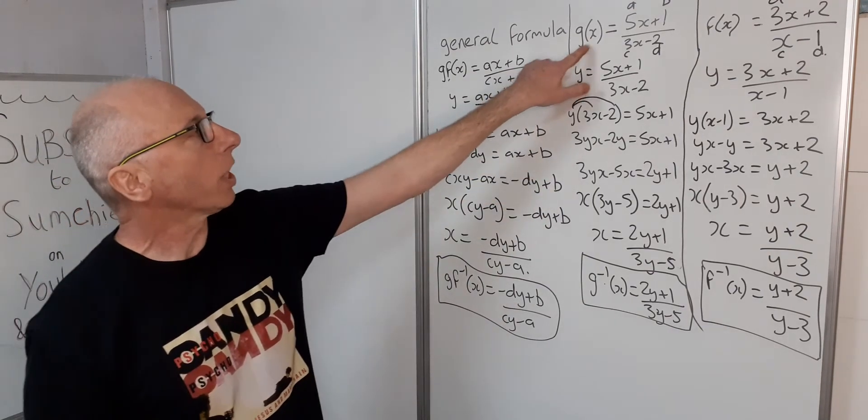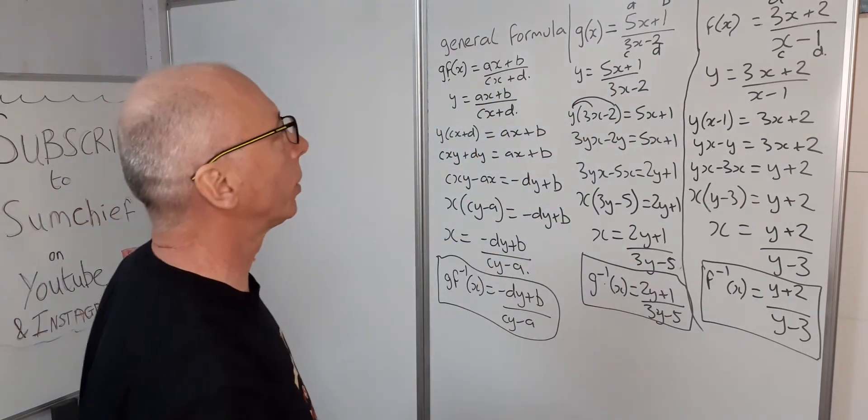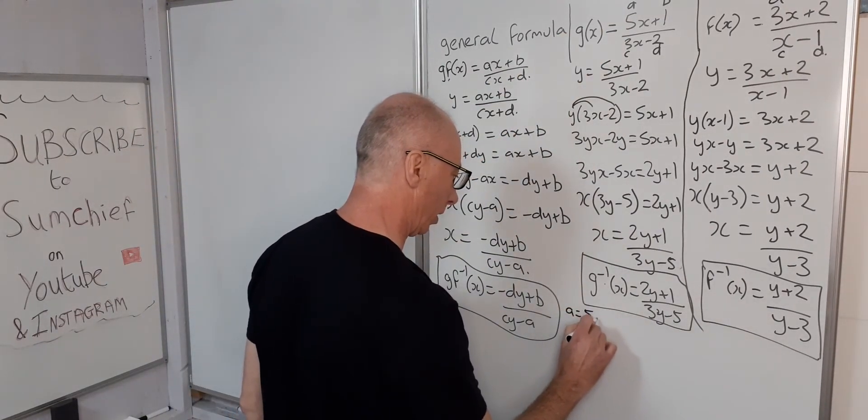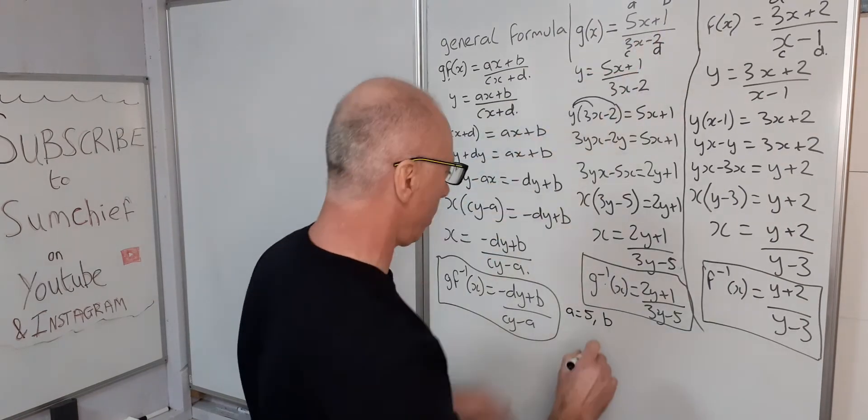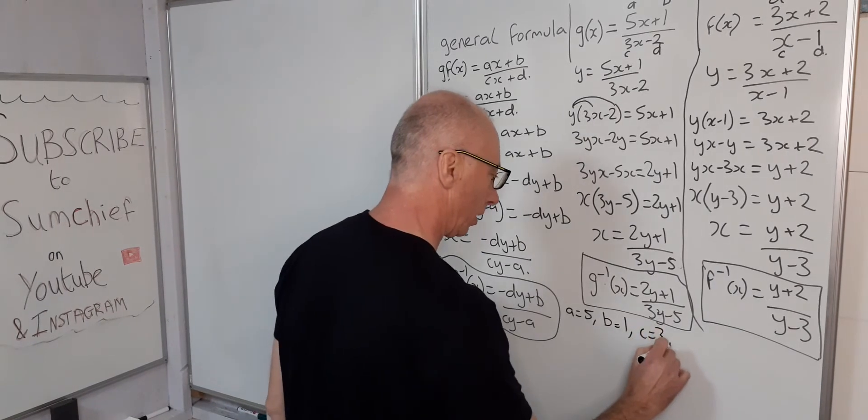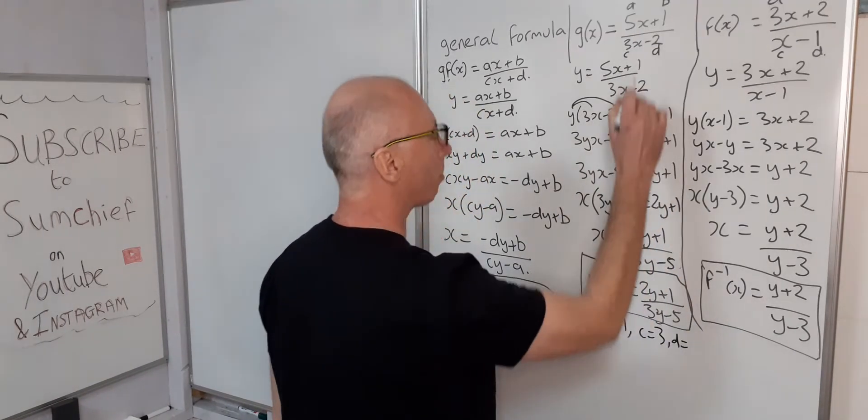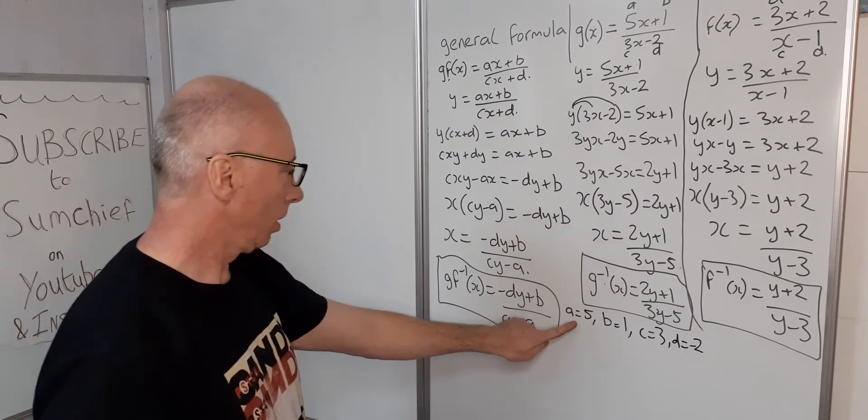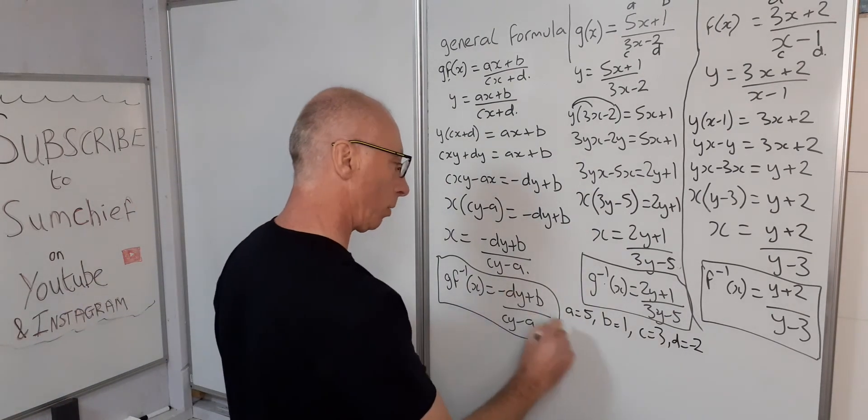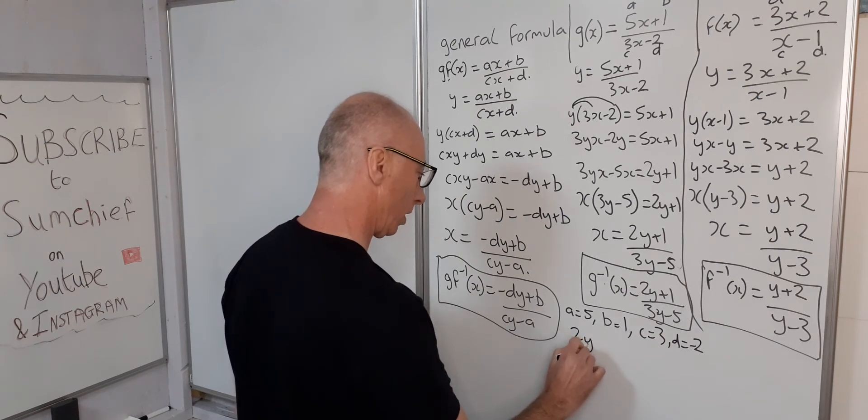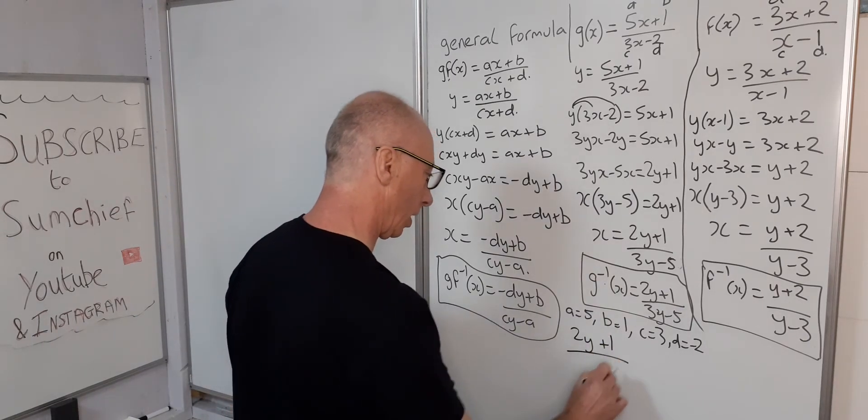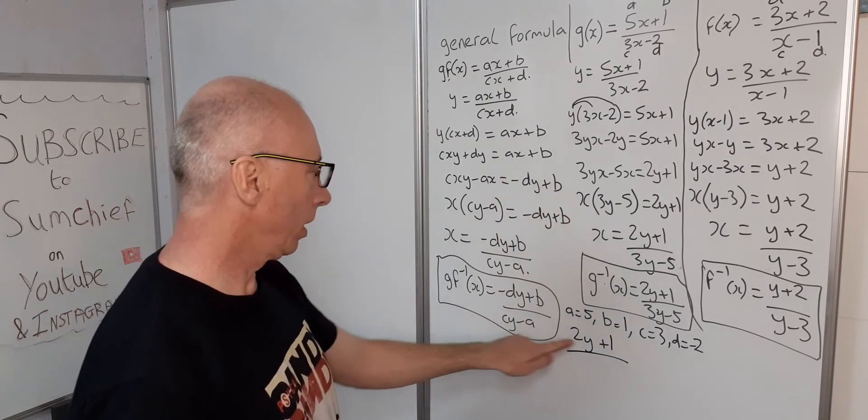So now as we've got the general formula, let's check it with all these solutions. So here we've got a is five, b is plus one, c equals three, d equals minus two. So let's put those into this and see what we get.